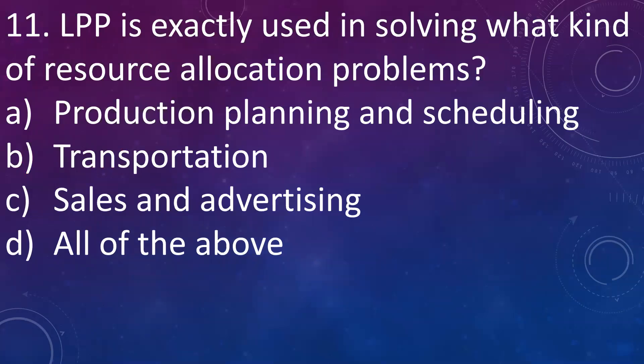Next question: LPP is exactly used in solving what kind of resource allocation problem? A. Production planning and scheduling, B. Transportation, C. Sales and advertising, D. All of the above. Answer is all of the above. We have seen the applications of linear programming — it is used in production and planning, transportation, and sales and advertising. LPP has a very broad scope of application in our daily life.